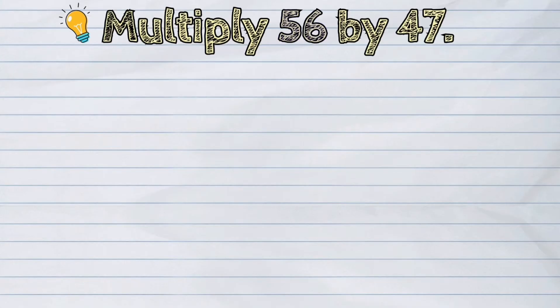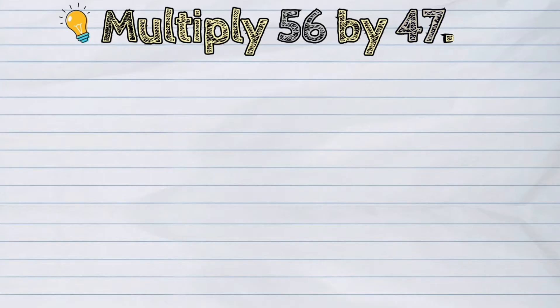Multiply 56 by 47. The first step in solving this is to align the numbers in columns.